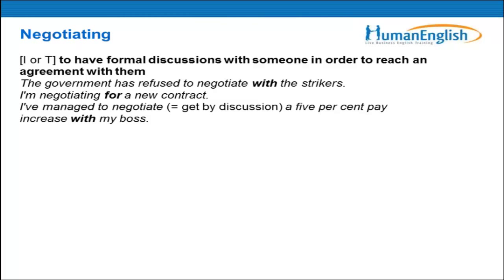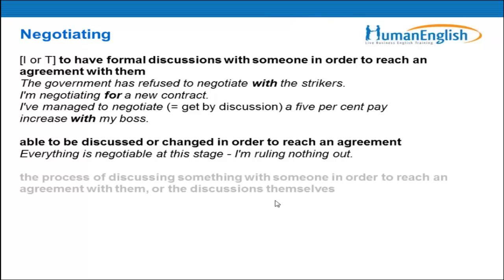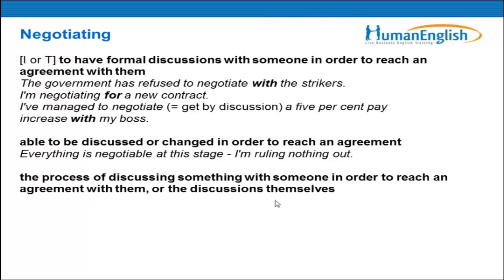To negotiate means to have a formal discussion with someone in order to reach an agreement with them. For example: 'The government has refused to negotiate with the strikers.' So here we have 'negotiate with.' Another example: 'I'm negotiating for a new contract.' And: 'I've managed to negotiate a 5% pay increase with my boss.' So we use 'negotiate with' or 'negotiate for.'